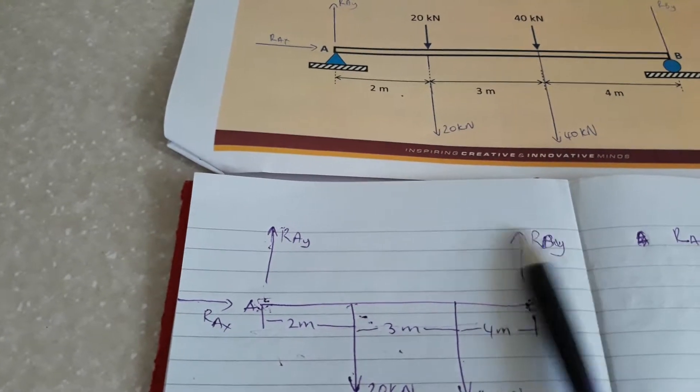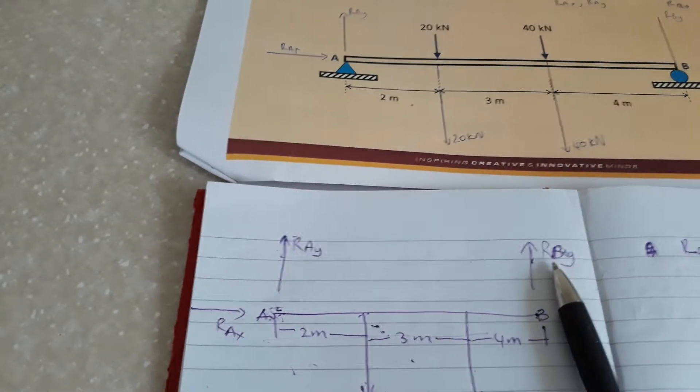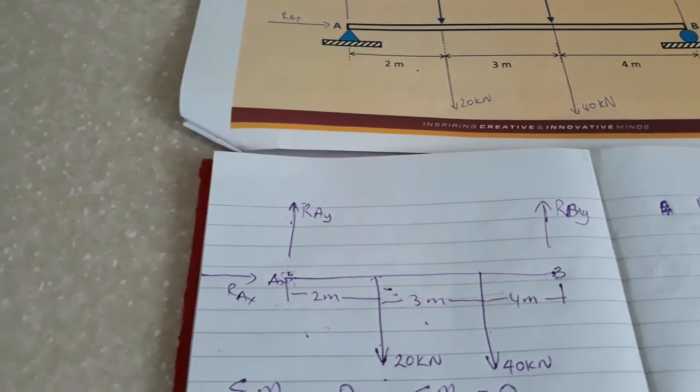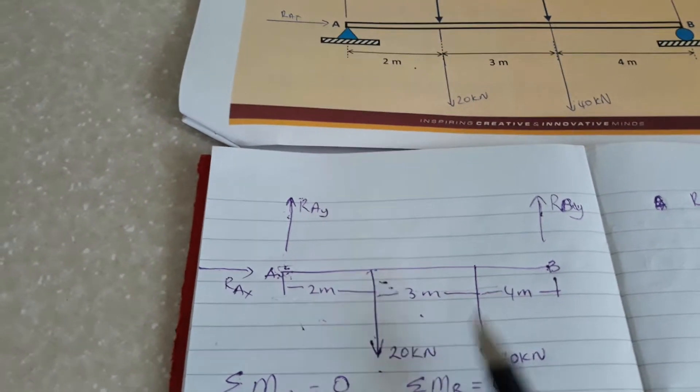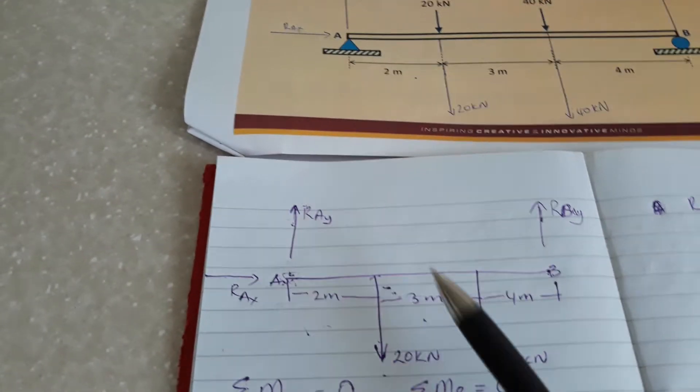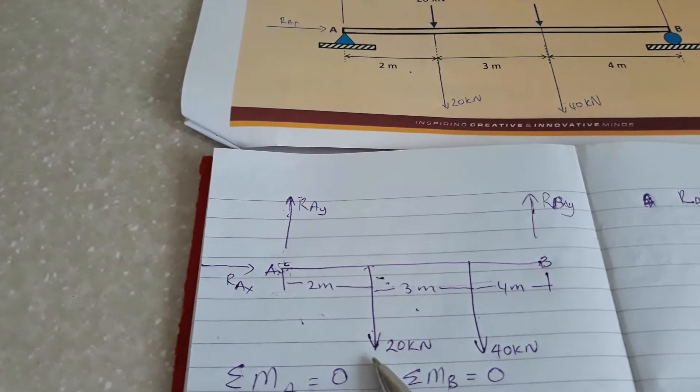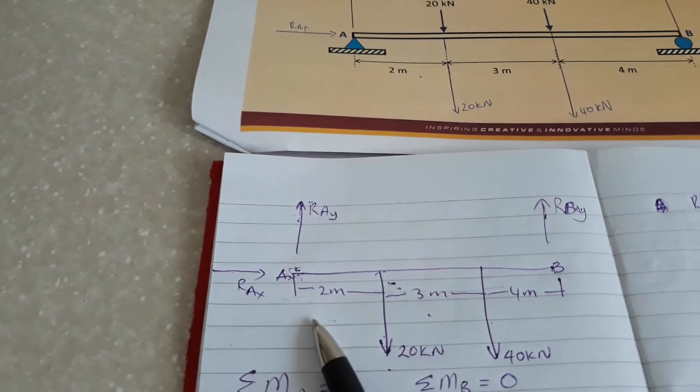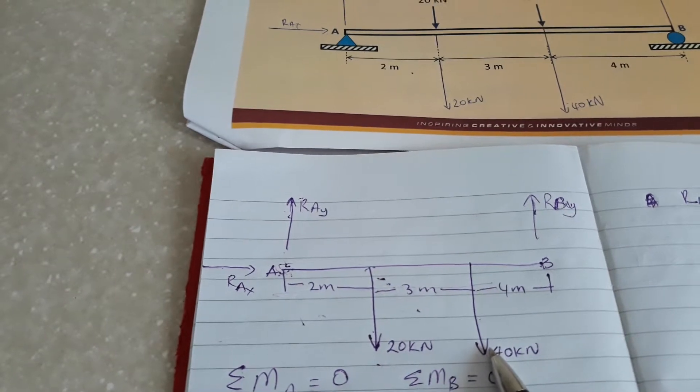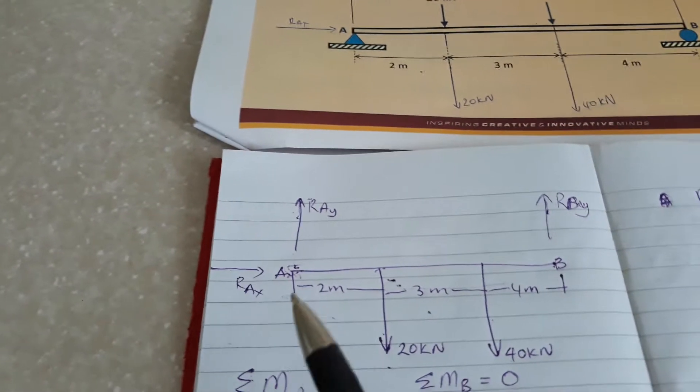For point B which is a roller support, this is just one direction reaction which is RBy. I also usually just draw the forces to represent the direction. The 20kN force is 2 meters from point A and the 40kN force is 5 meters from point A.